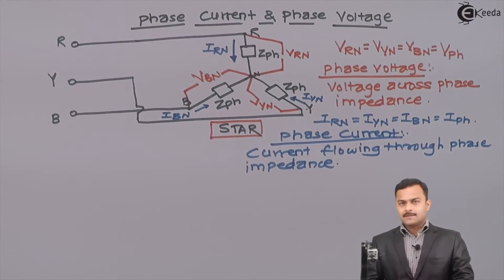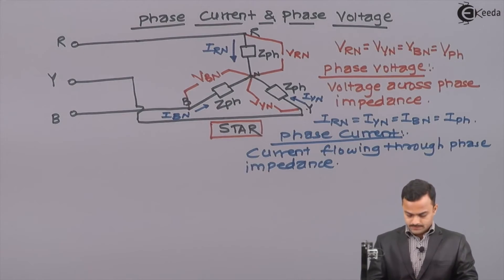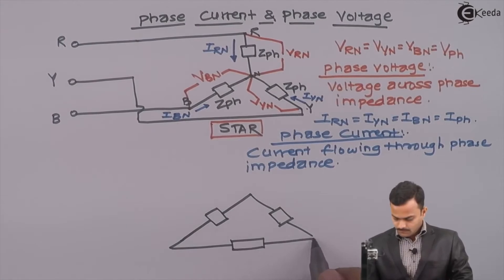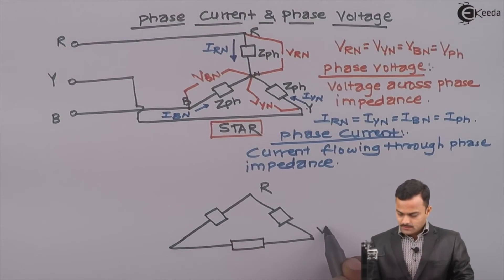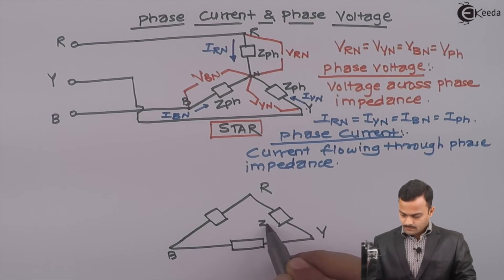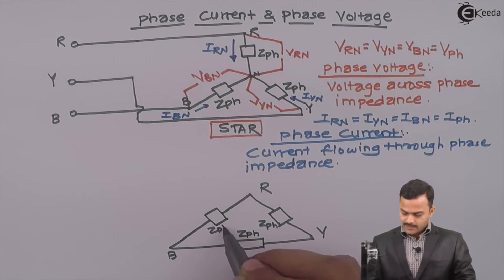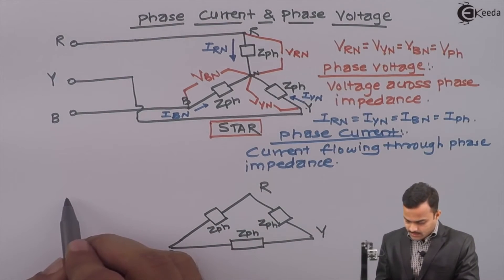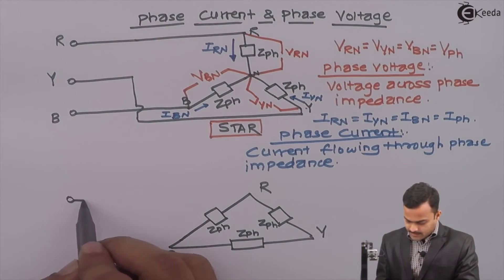Now we apply the same concept to a delta connected load. The delta connected load has a phase impedance Zph between each pair of terminals R, Y, and B, with equal magnitude and the same power factor angle. This load is supplied by a three-phase supply.